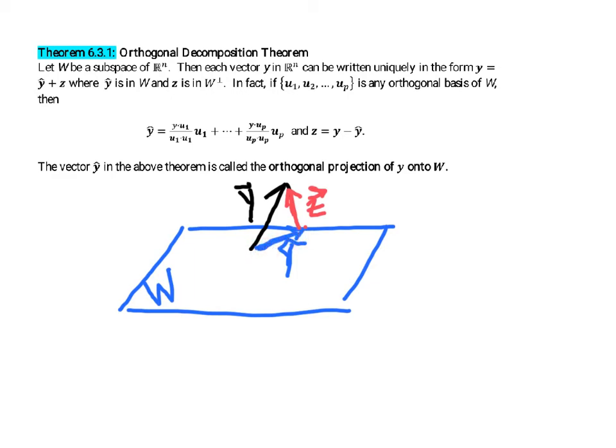So that's why we call it, you can imagine, think of it as a projection in that sense, where if you shine a light above W, the shadow that it casts in this subspace W is this vector here.